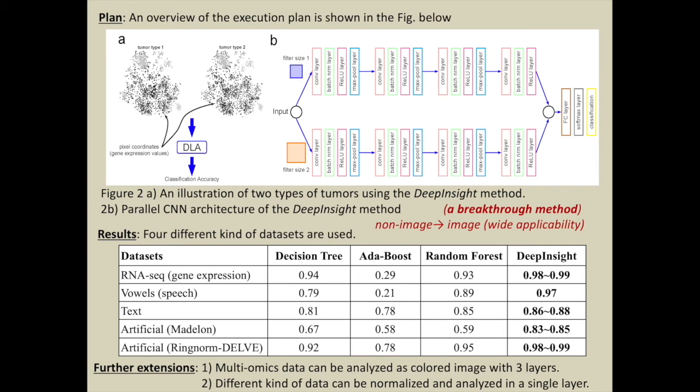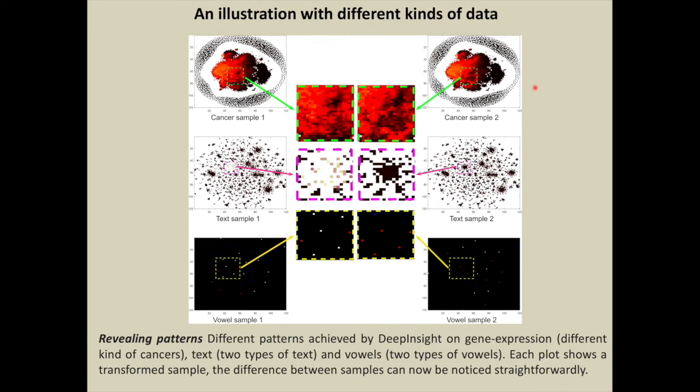Further extensions are also possible, like multiomics data can be analyzed as colored image with three layers. Different kinds of data can be normalized and analyzed in a single layer.